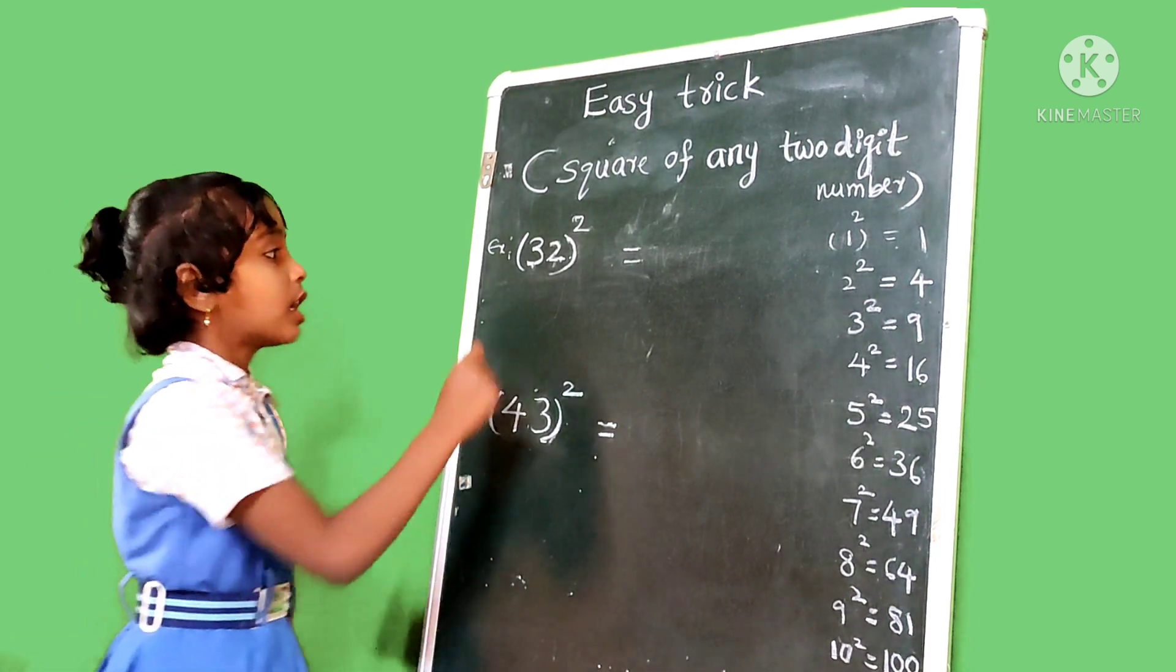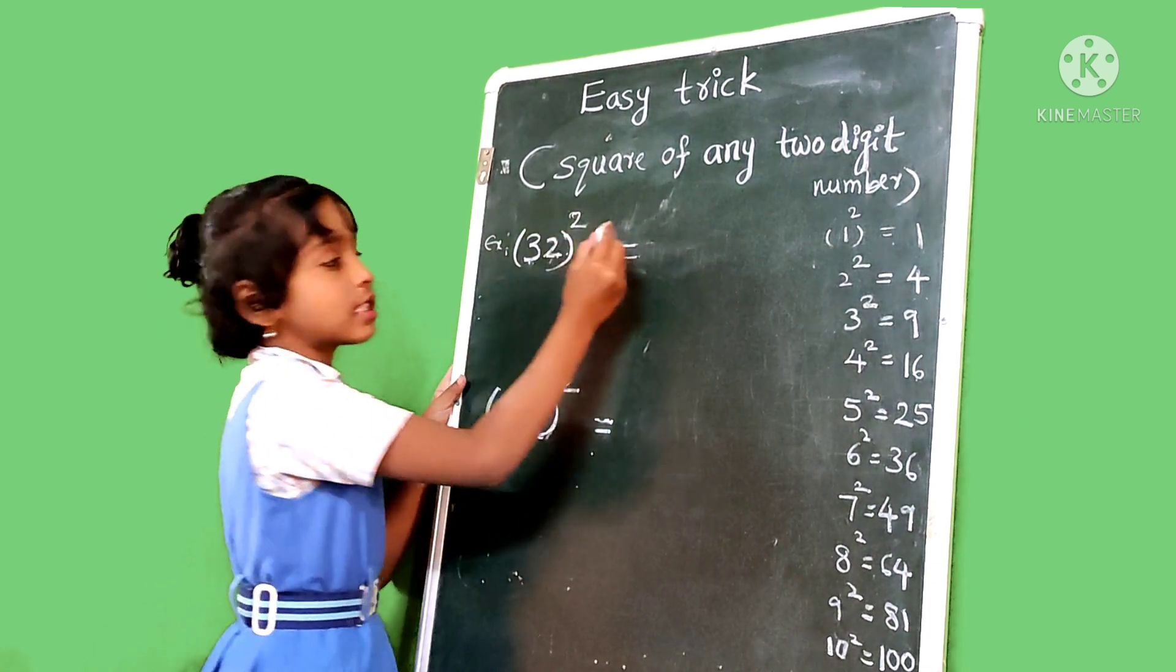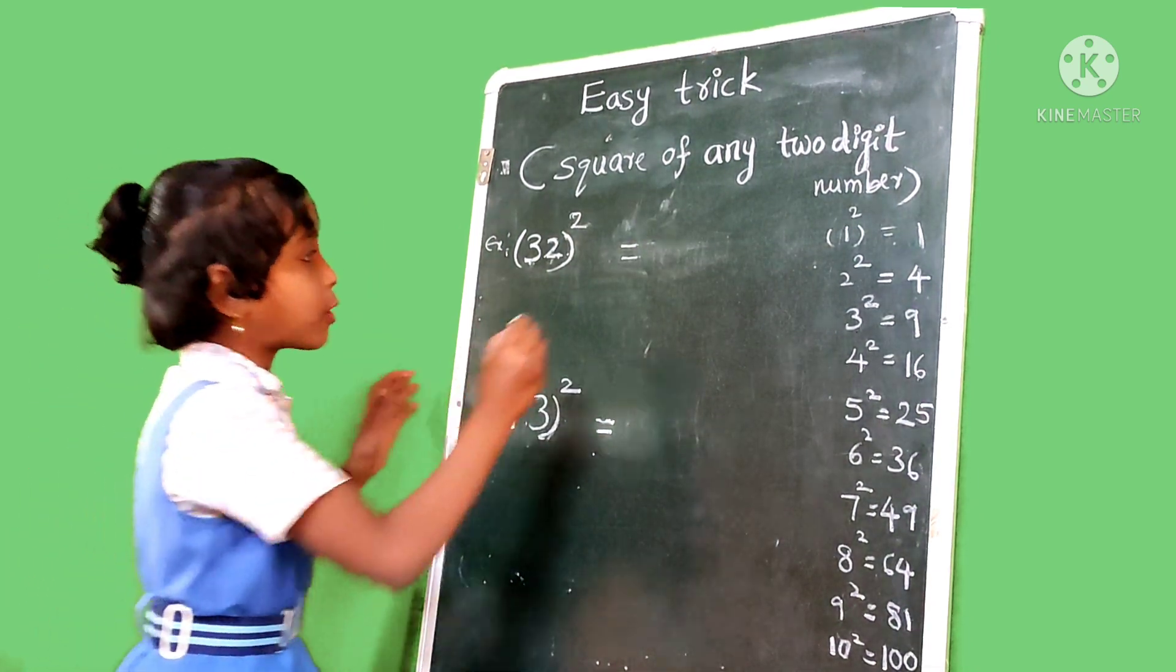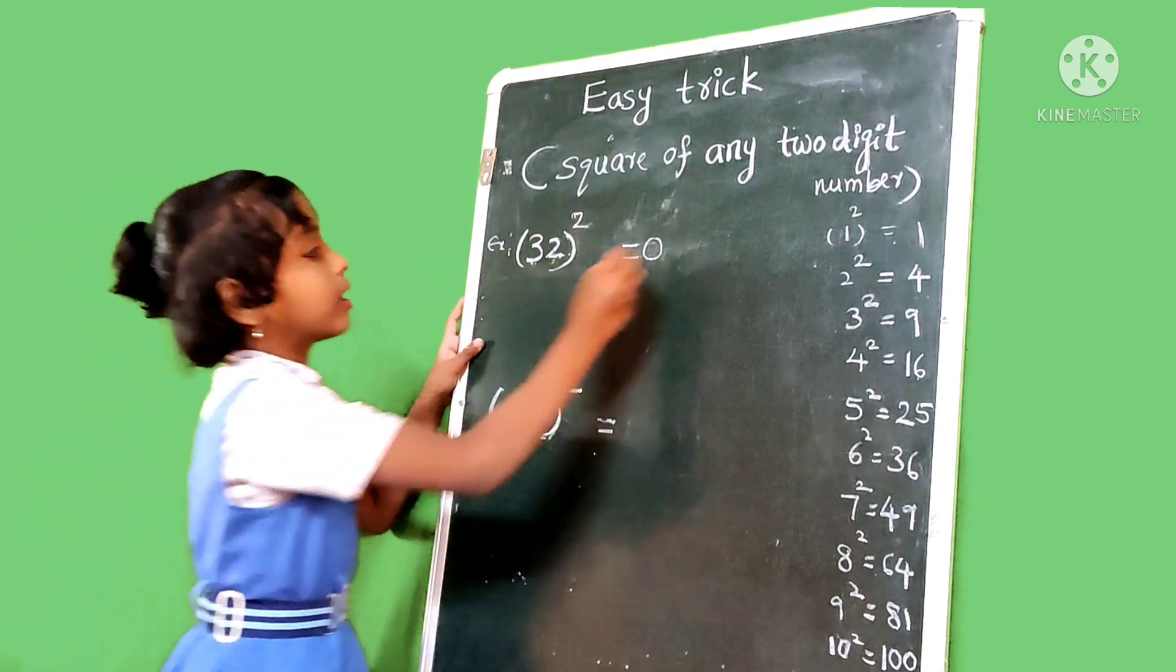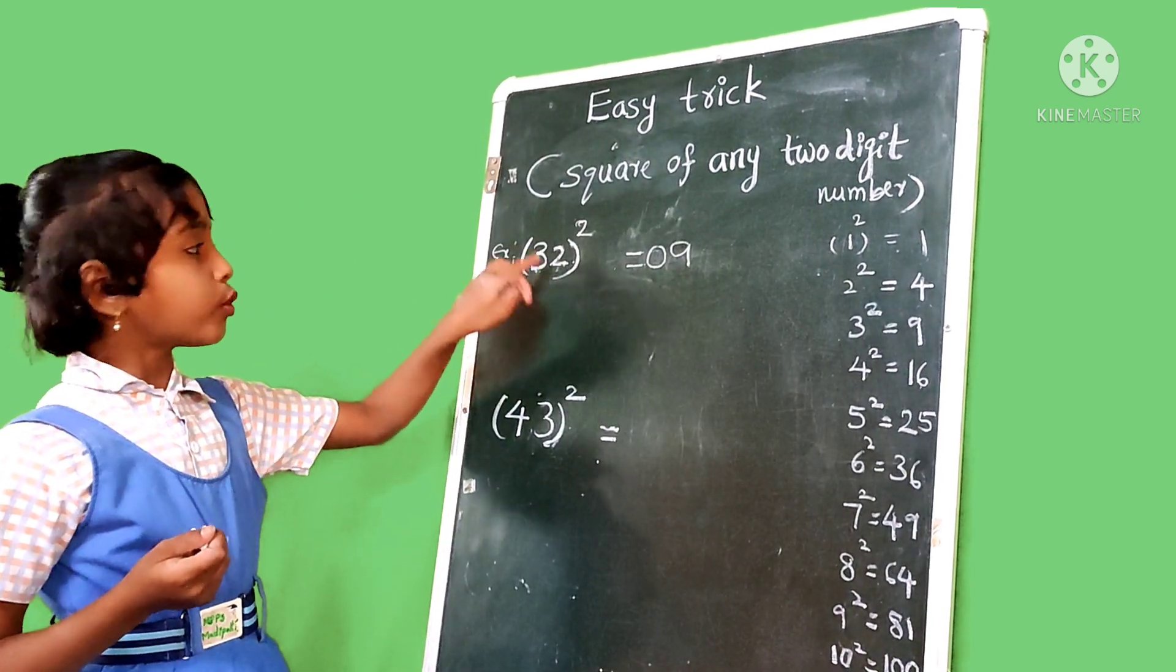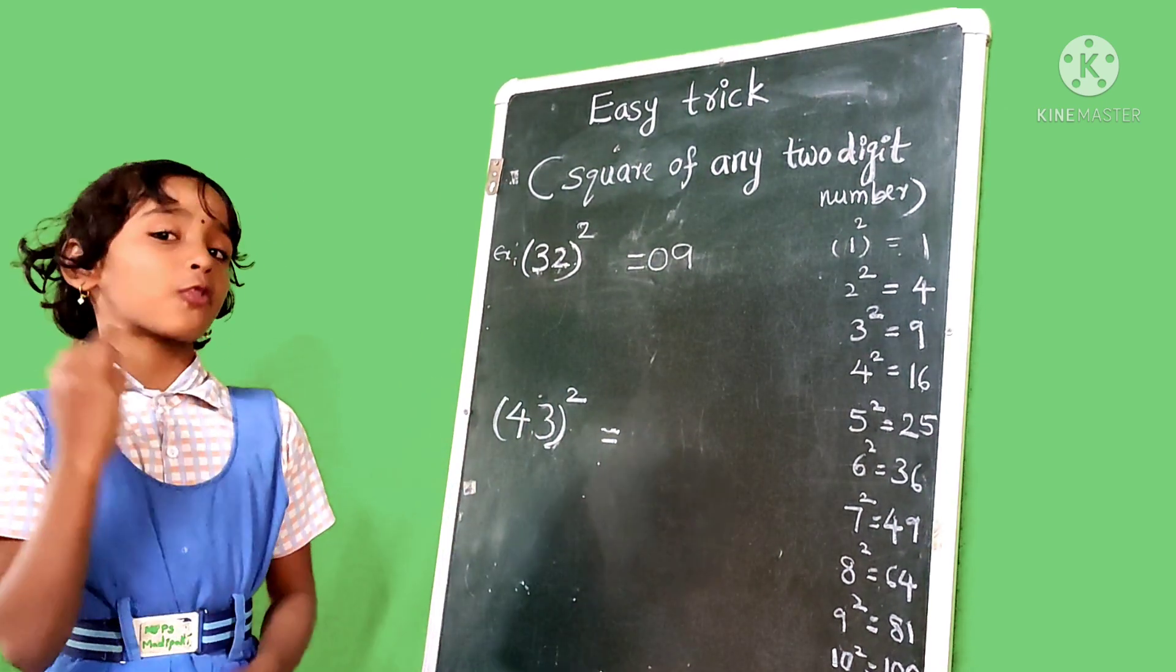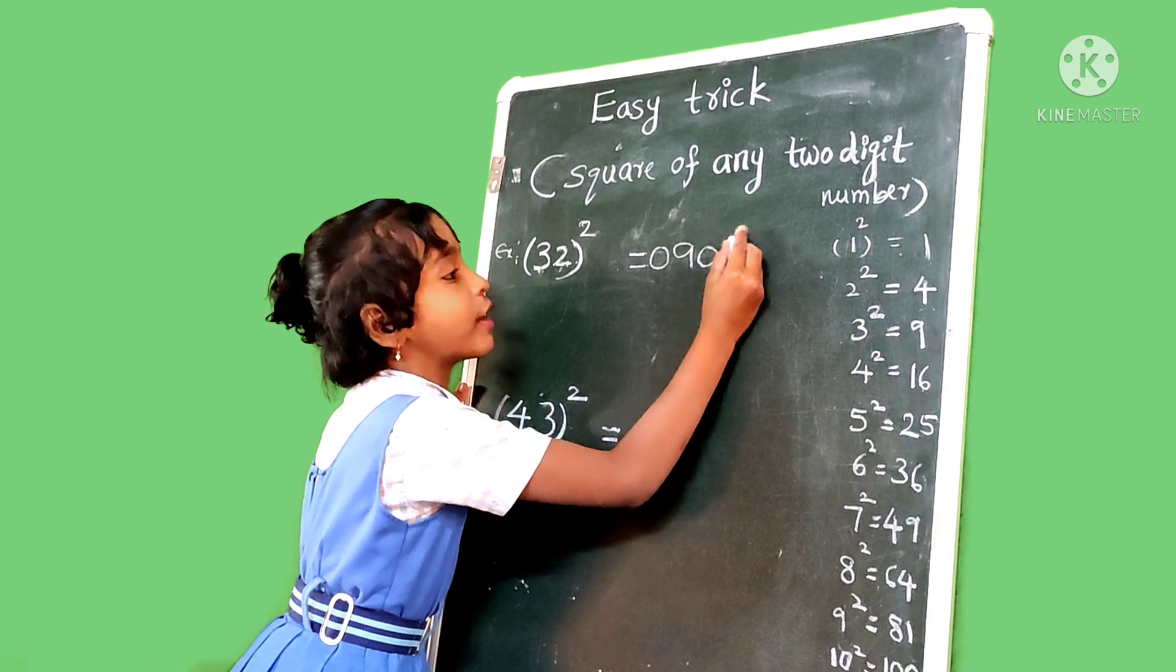First example, 32 squared. Then find out the 3 squared. This square is 9. First, any single-digit number, before that we put 0. Okay? And we write 9. And next 2 squared. Find out the 2 squared. 2 squared is 4. So 4 is the single-digit number. Before that we put 0 and write 4.